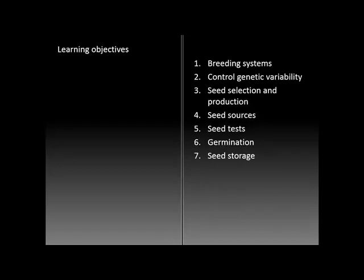The learning objectives will be to begin to understand and describe breeding systems, methods of controlling genetic variability, seed selection and production, a little bit on seed sources, seed tests. We'll get into germination more in the next unit, and a little bit on storage.